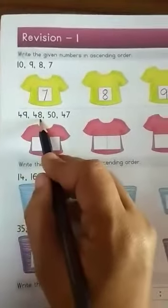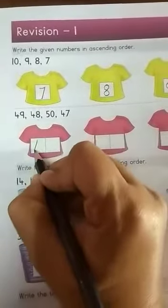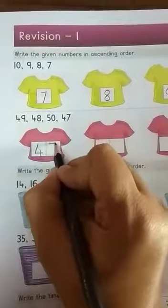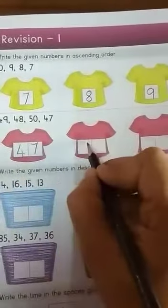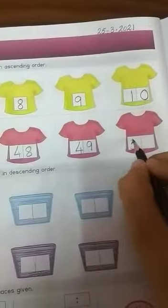Now next 49, 48, 50, 47. So 47 is the smaller one. Then comes 48, 48. After 48, comes 49, 49 and at last 50, 50.